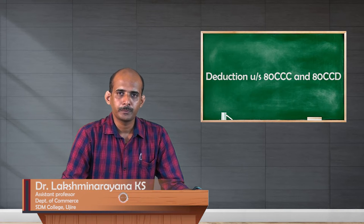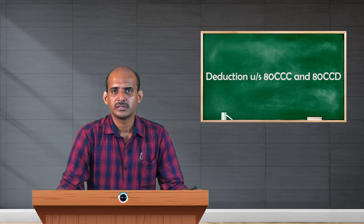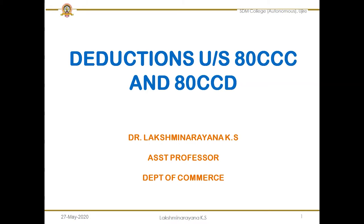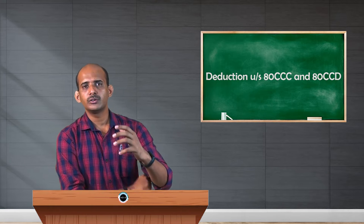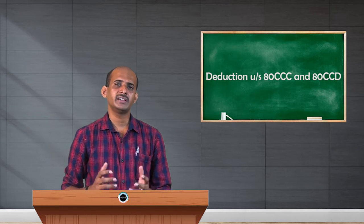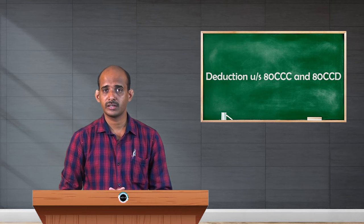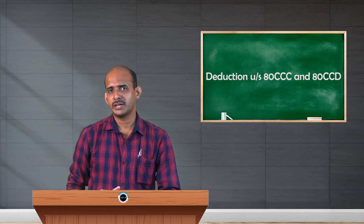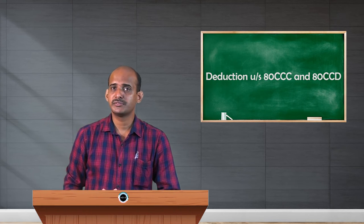In this video I will explain deductions available under Section 80CCC and 80CCD. An individual assessee, at the end of the year, is supposed to file the income tax return before the income tax department, presenting all sources of income earned over 12 months. When income from all sources looks very large, people may try to avoid tax through illegal or improper means of not presenting correct details.